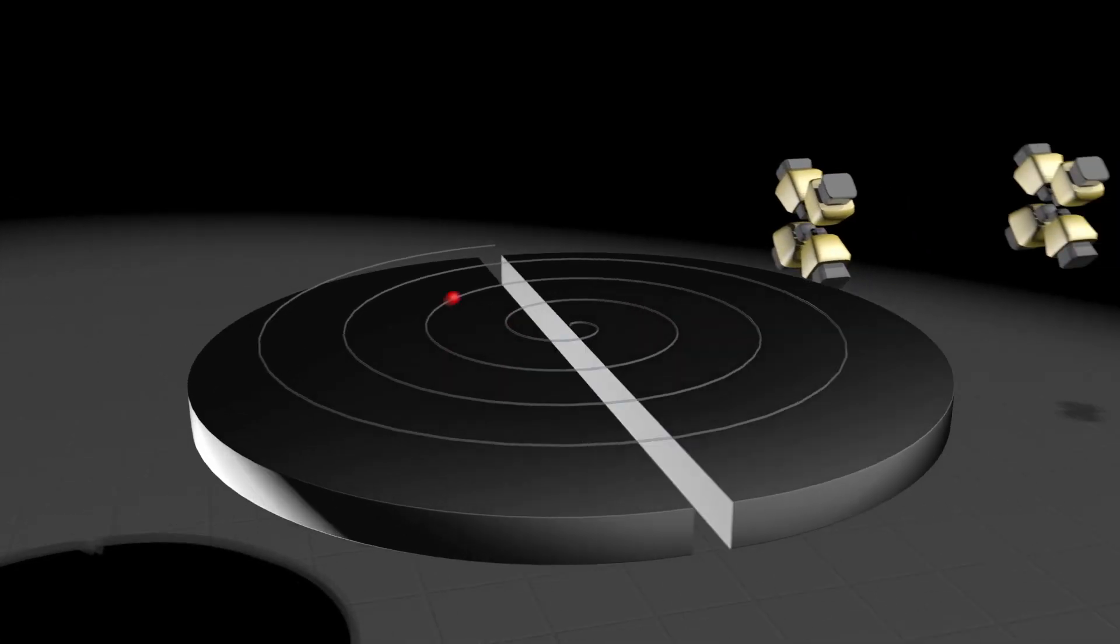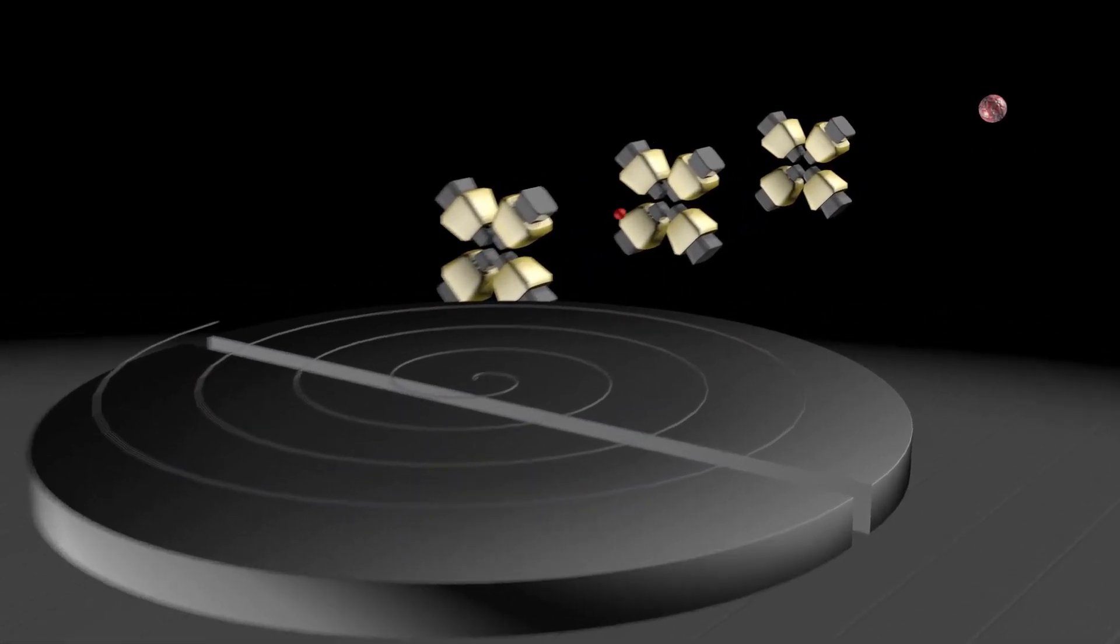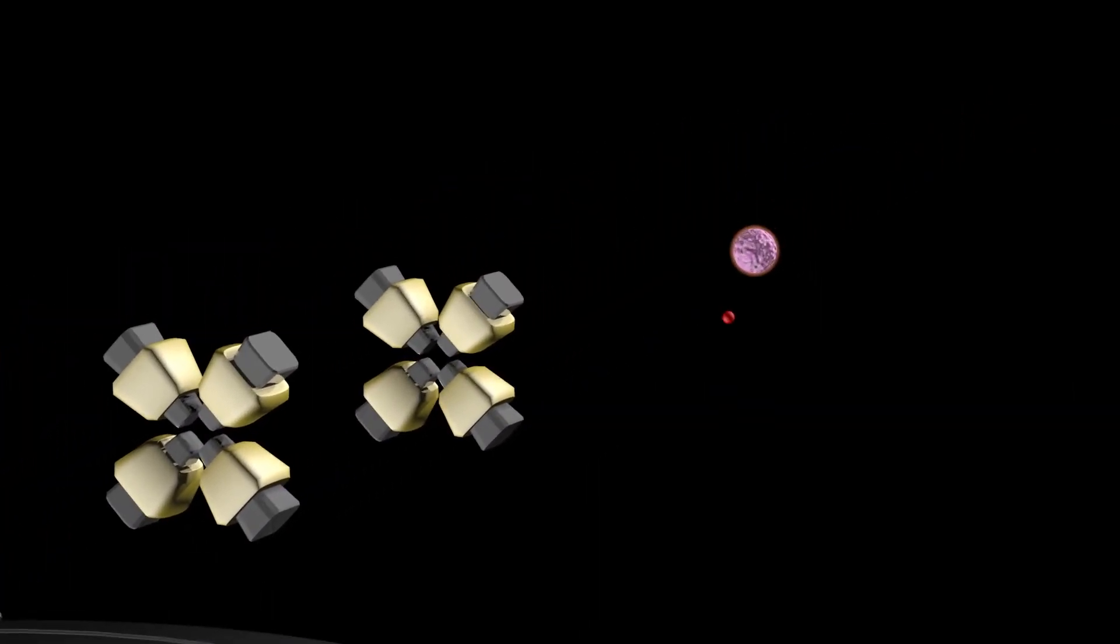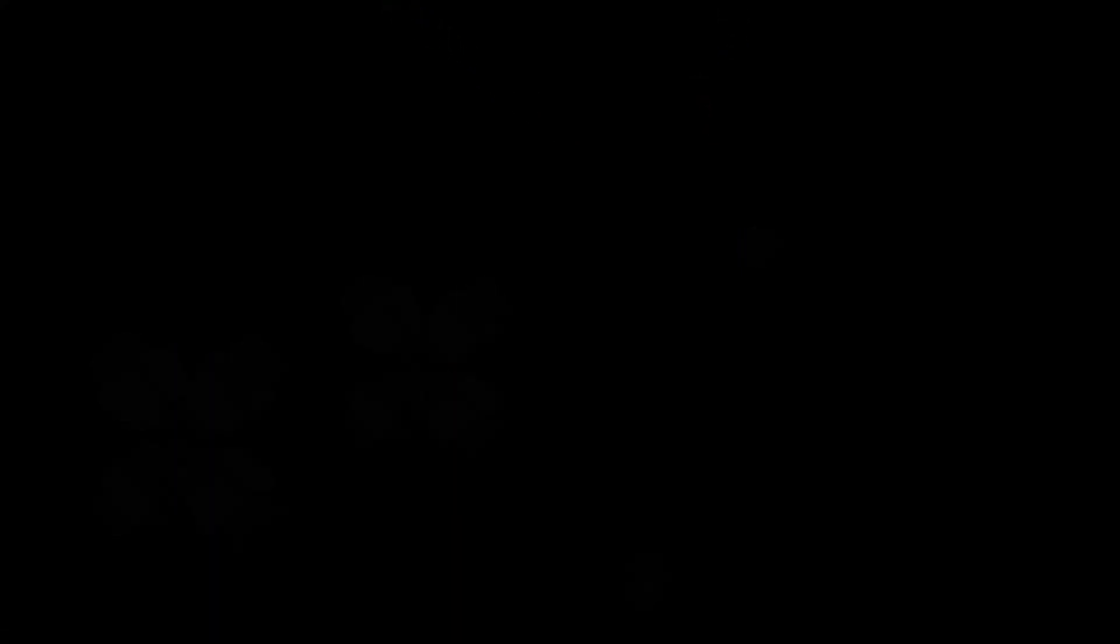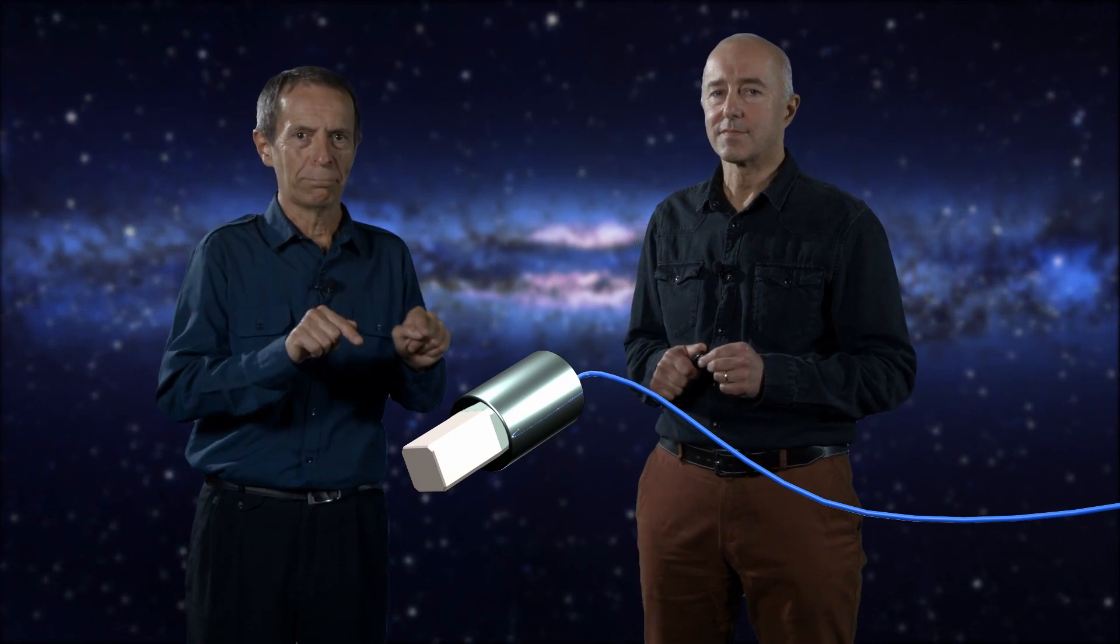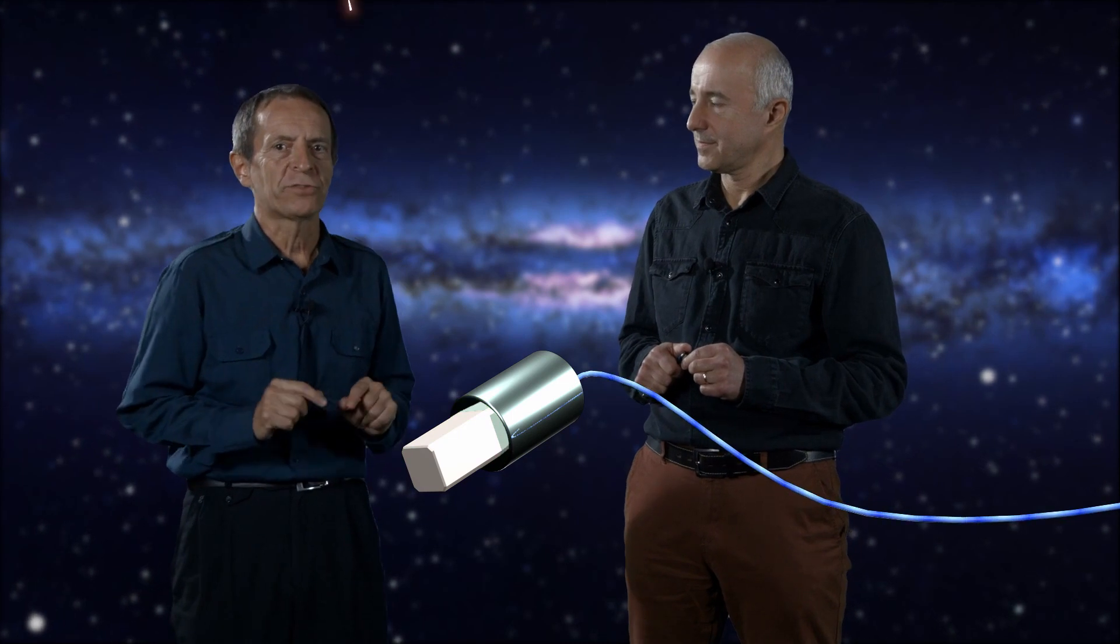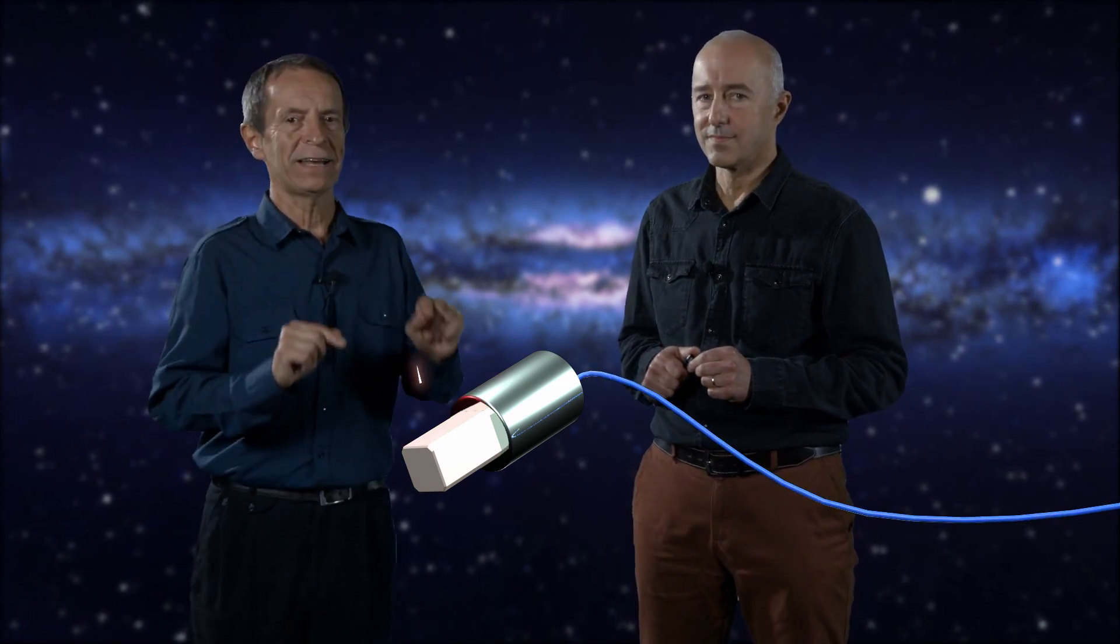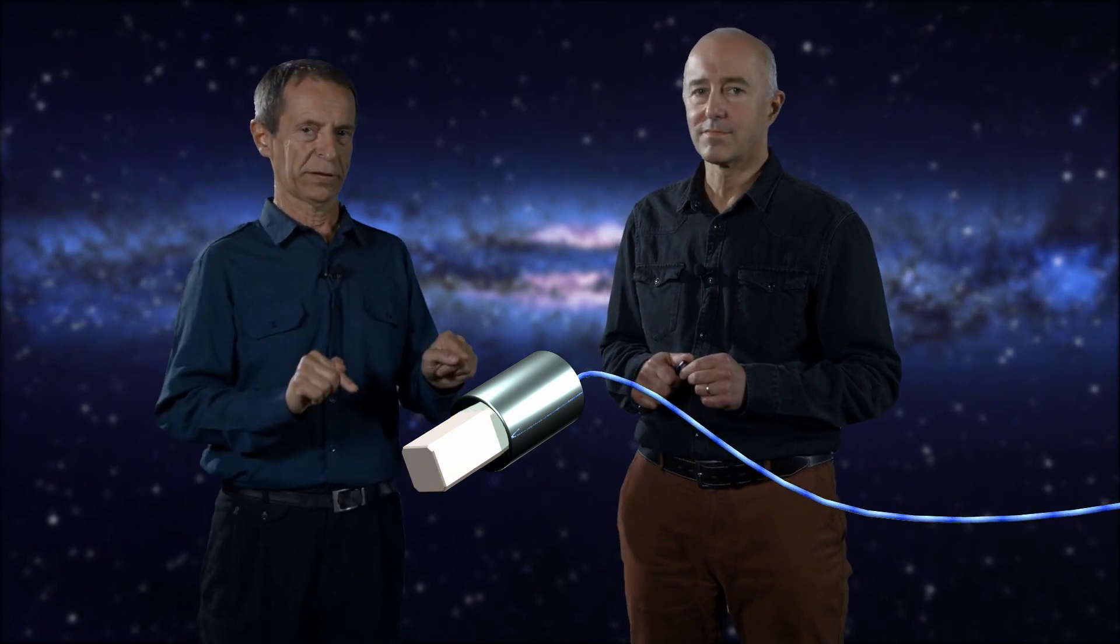Gdybyśmy spodziewali się odpowiedzi dźwiękowej, przygotowalibyśmy czułe mikrofony. Ponieważ jądro odpowiada wysyłaniem błysków promieniowania, zatem musimy przygotować specjalne czujniki. Oto przykład takiego czujnika. To detektor promieniowania gamma. Gdy wpadnie do niego kwant promieniowania gamma, przetworzony zostaje na sygnał elektryczny, który ostatecznie trafi do naszych komputerów.